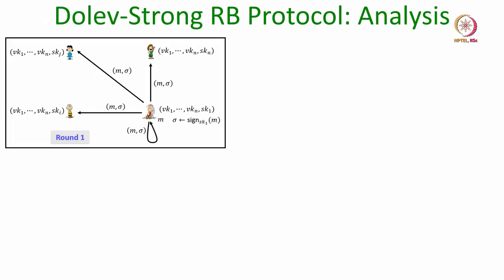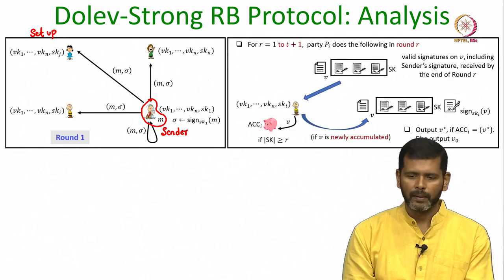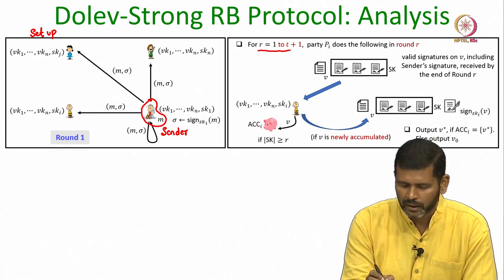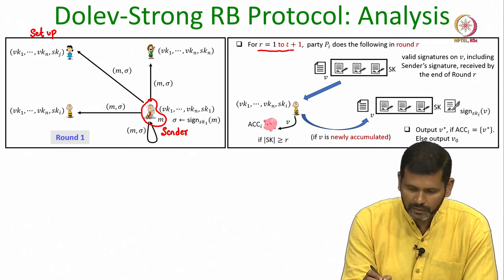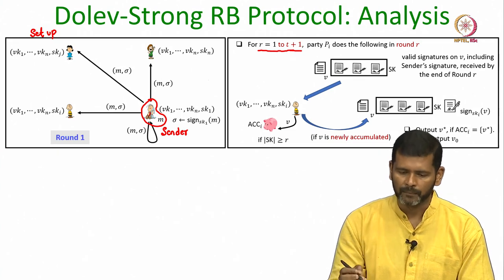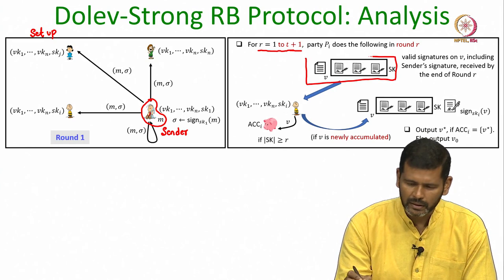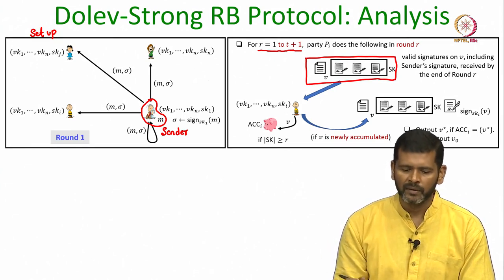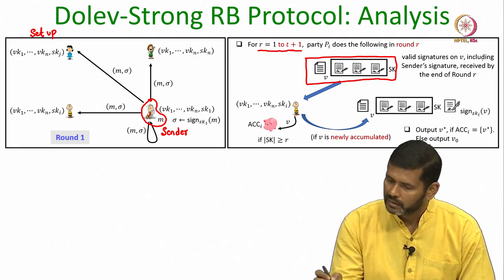So let us do the analysis for the Dolev-Strong protocol. Here is the protocol — let me summarize it again. In the first round the sender sends its signed message to everyone. Recall that in the Dolev-Strong protocol we have a signature setup where every party has its own signing key and the verification keys of all the parties are publicly available.